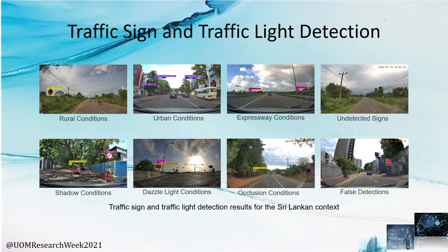Some of the qualitative results obtained for the traffic sign and traffic light detection tasks are shown in this slide, including rural, urban, expressway, shadow, difficult, and occlusion conditions, as well as undetected signs and false detections.